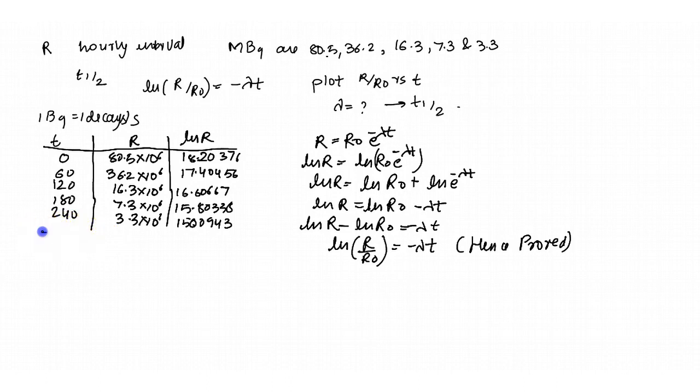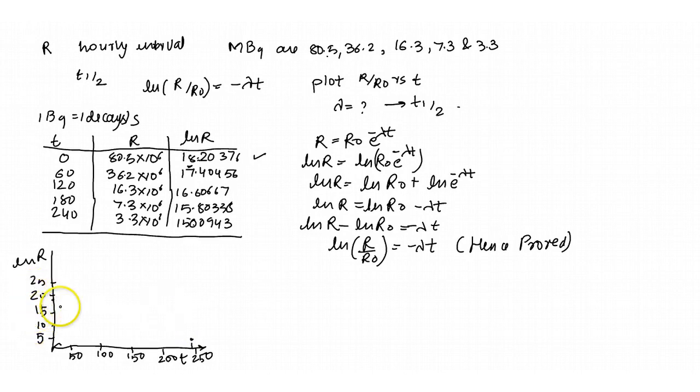And now comes the plot. The plot will be ln of R and time t here. This will be 50, 100, 150, 200, 250. And the plot on the y-axis will be 5, 10, 15, 20, 25. The largest value of ln R falls around 18. So 18 will be here. And up to the time 240 seconds, 240 lies here. The graph will be a straight line joining these two points.